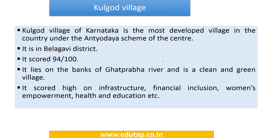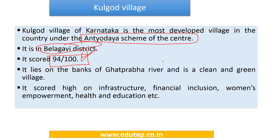Kulgore village of Karnataka has ranked number one in the Antodaya scheme of the central government. It falls in Belgavi district of Karnataka and has a total score of 94 out of 100. This village lies on the banks of the Ghadprabha River. It is a clean and green village, scored on 47 parameters, and performed particularly high on infrastructure, financial inclusion, women's empowerment, health, and education parameters.